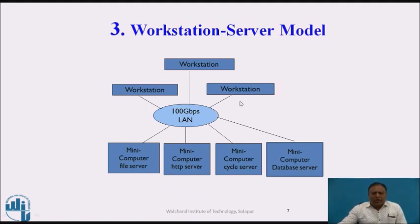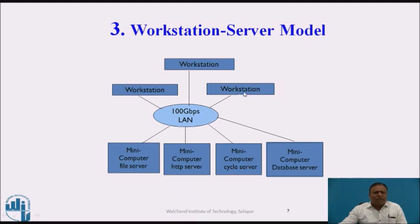In the figure, three workstations and four servers are shown. The first server is a file server, the second is an HTTP server, the third is a cycle server, and the fourth is a database server. These servers provide different kinds of services to the different workstations as per their requirements. We can increase the number of servers on the server side and add any number of workstations, giving more scalability in the workstation server model.